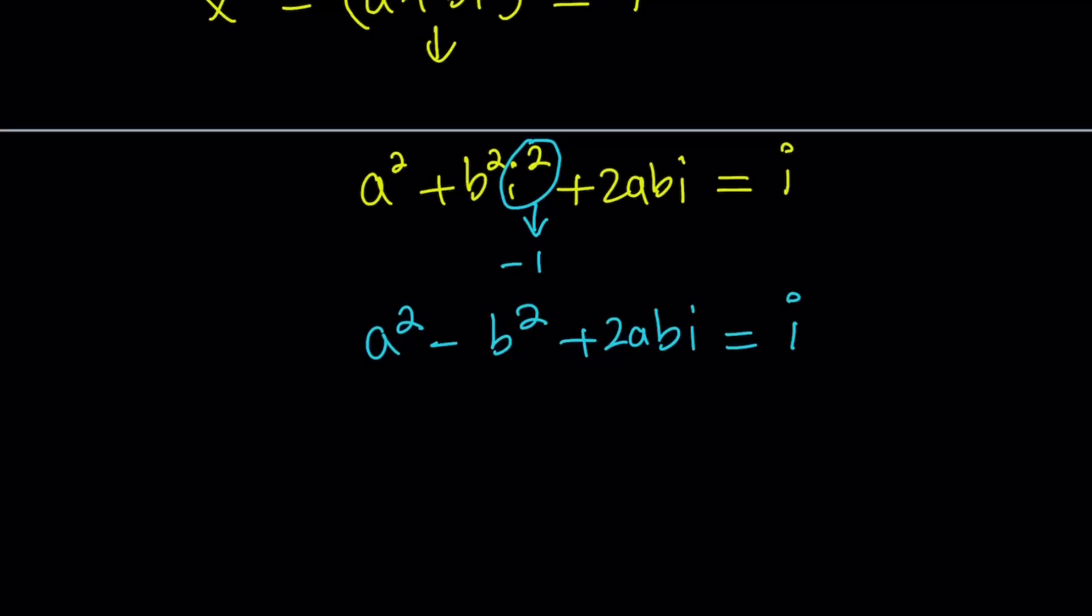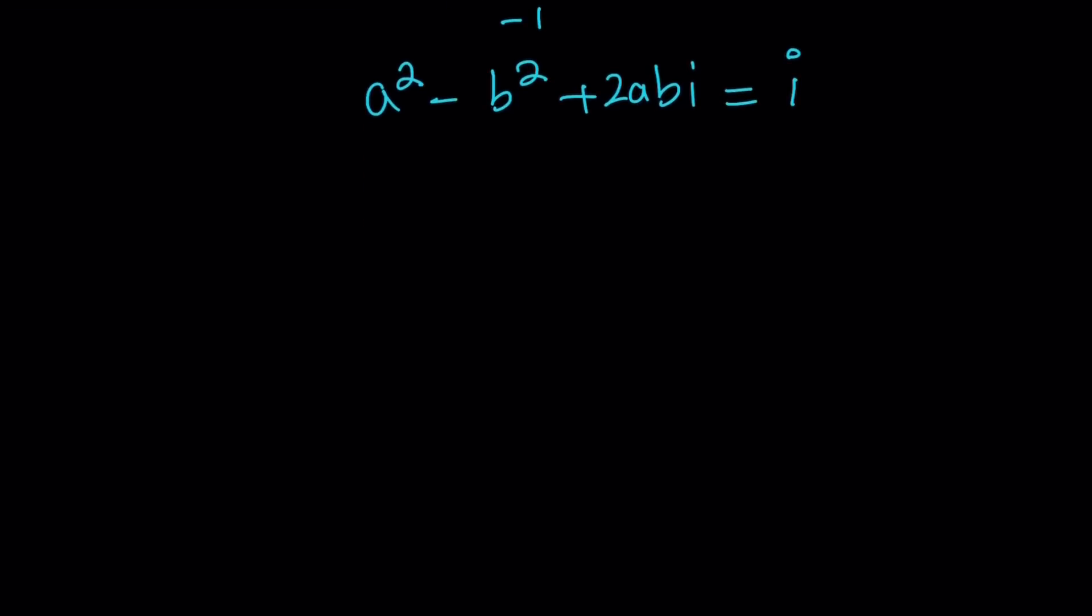Now, this equation doesn't make much sense unless you write the i as a plus bi or x plus yi or whatever. Something plus something i in the standard form of a complex number. So here's what we're going to do. We're going to write the i as 0 plus 1i, right? Okay, that's what it means, doesn't it? So it's a pure imaginary number. It doesn't have a real part.